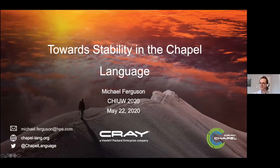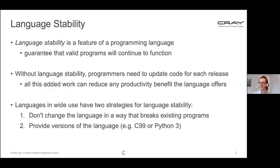I'm going to talk about language stability. So what is language stability? It's a feature of a programming language — a guarantee that a valid program in that language will continue to function. There might be a different definition for valid program; maybe certain things aren't part of the stable part of the language, but you could still use them if you wanted to.